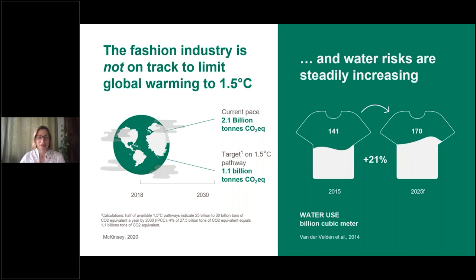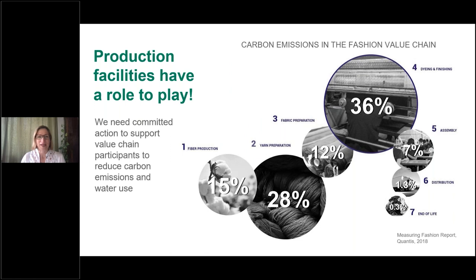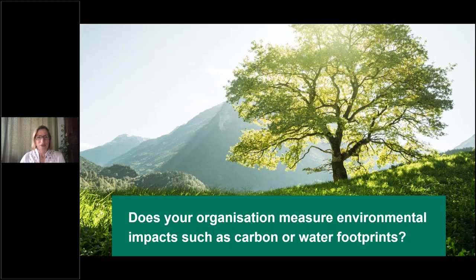When we look at the life cycle of fashion — part of a study conducted by Quantis measuring the impacts of the fashion sector — over 50 percent of impacts are in three main stages: dyeing and finishing, yarn preparation, and fiber production. This means that production facilities have a really significant role to play to help reduce those impacts along the entire fashion value chain, and brands and retailers also have responsibility to support their suppliers in decarbonization efforts.